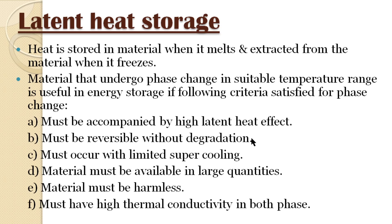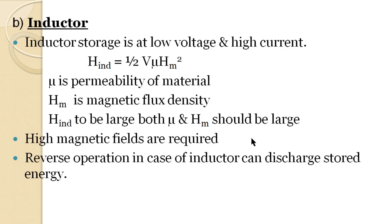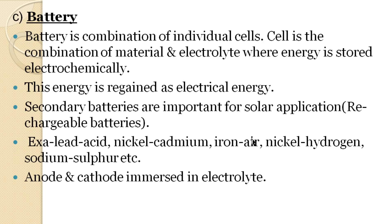The second storage system is electrical storage. There are three types: capacitor, inductor, and battery.